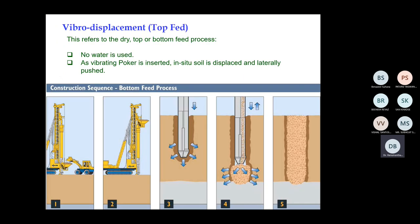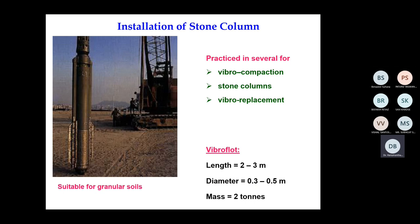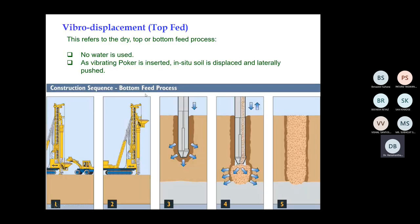Regarding construction technology: this is the vibroflot — a very large device attached to a crane. The vibroflot is inserted into the ground, and advancement happens by two things: either a jet of water or a jet of air, depending on soil type. For clay soils — which are usually saturated — you use a jet of water. For cohesionless loose sand, air can be used as the medium to advance the borehole.